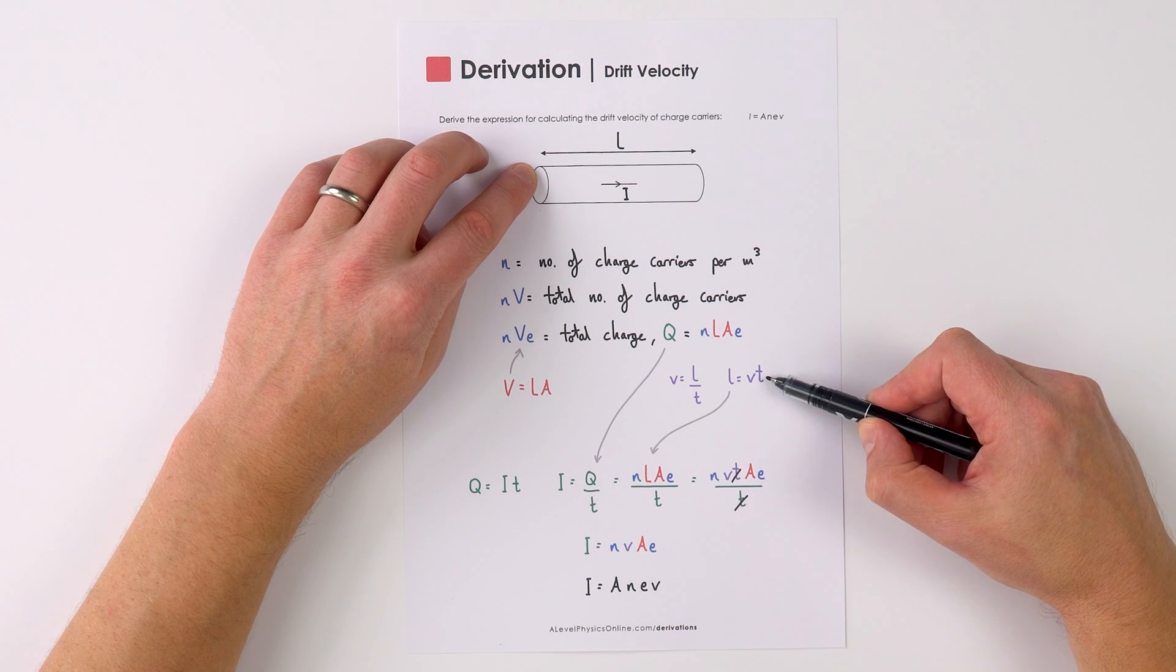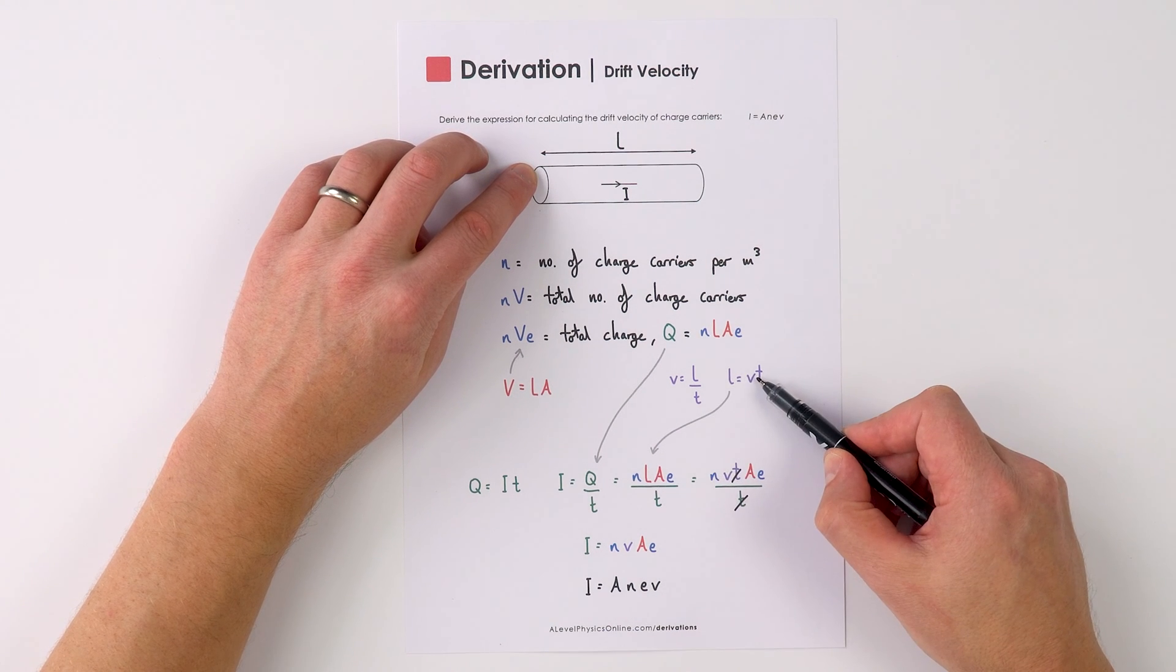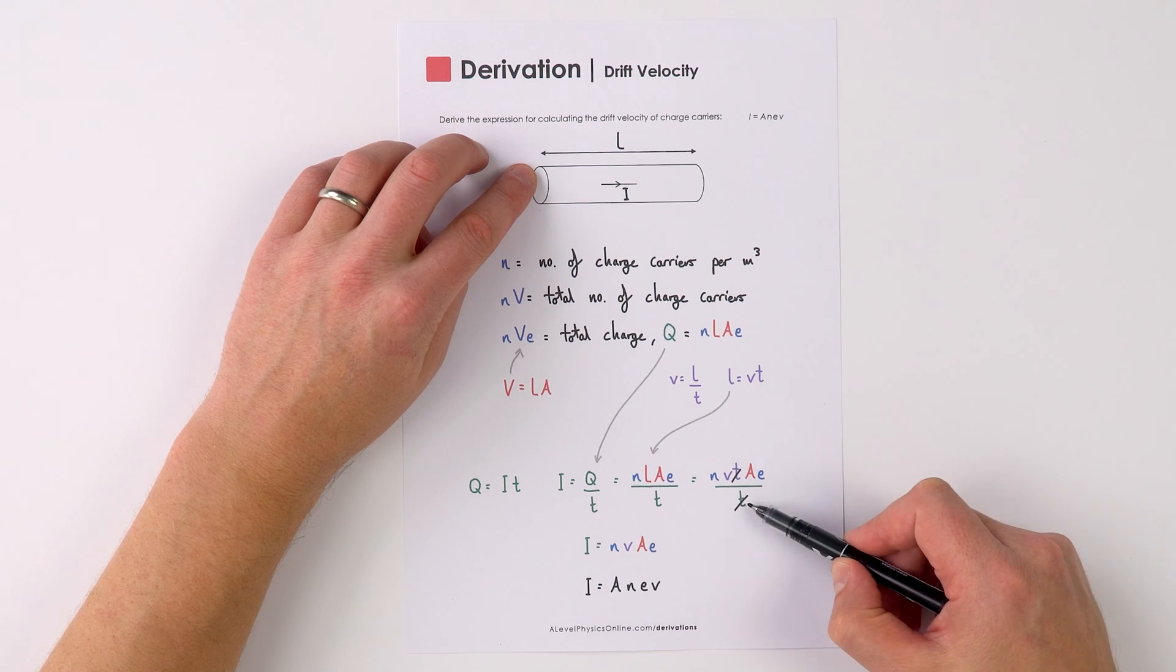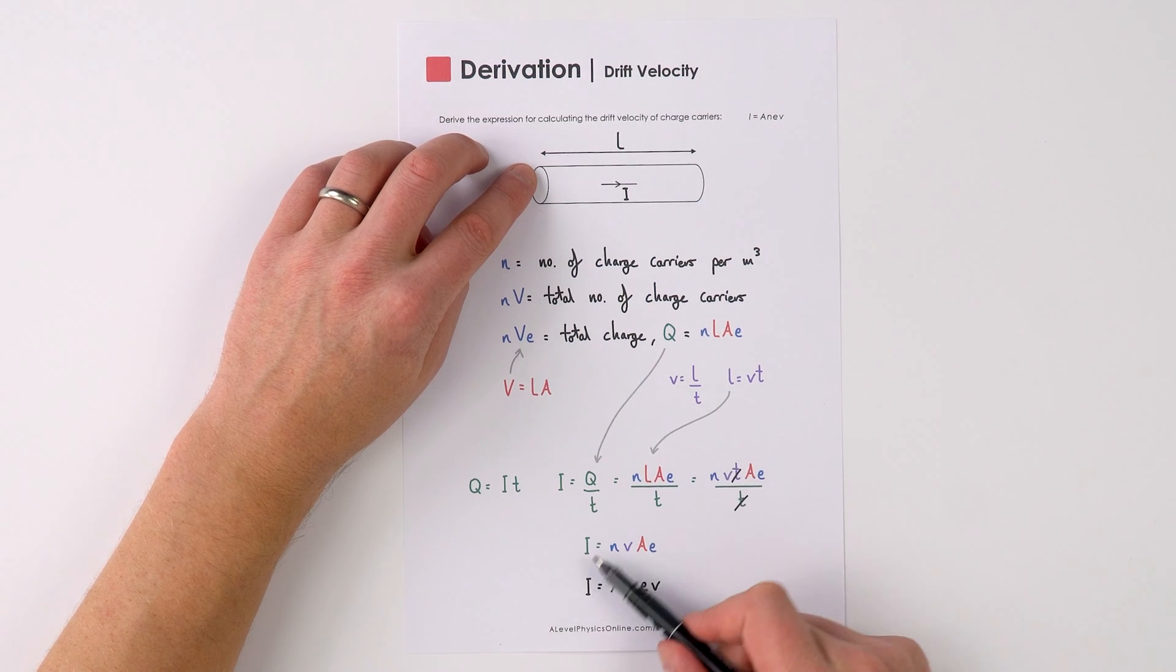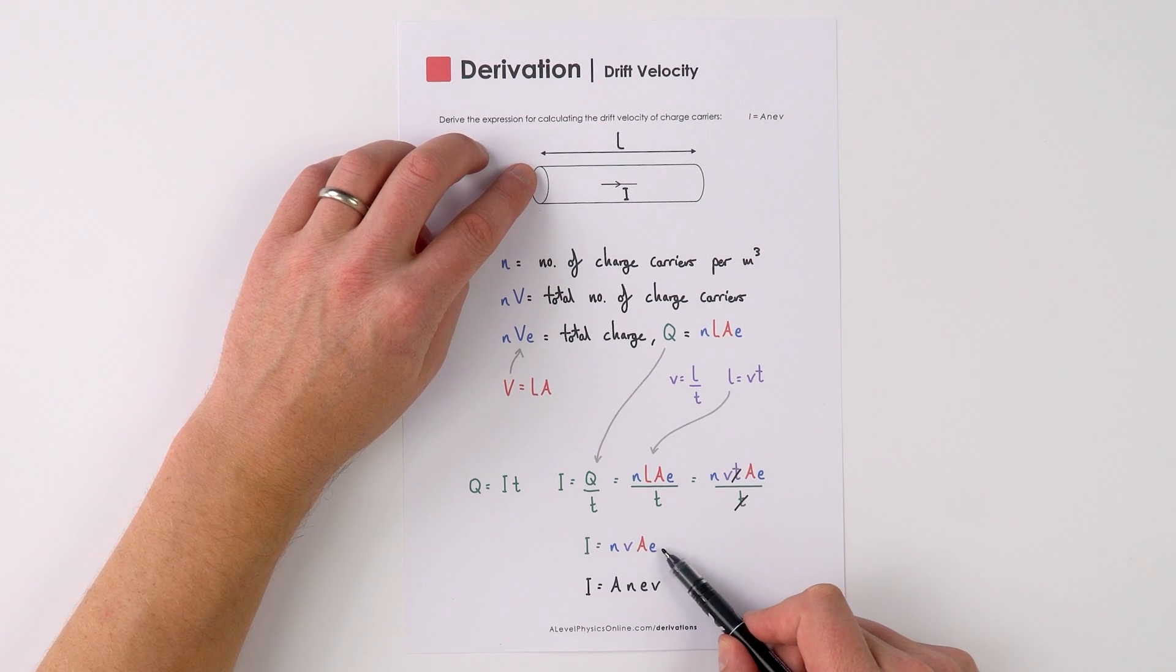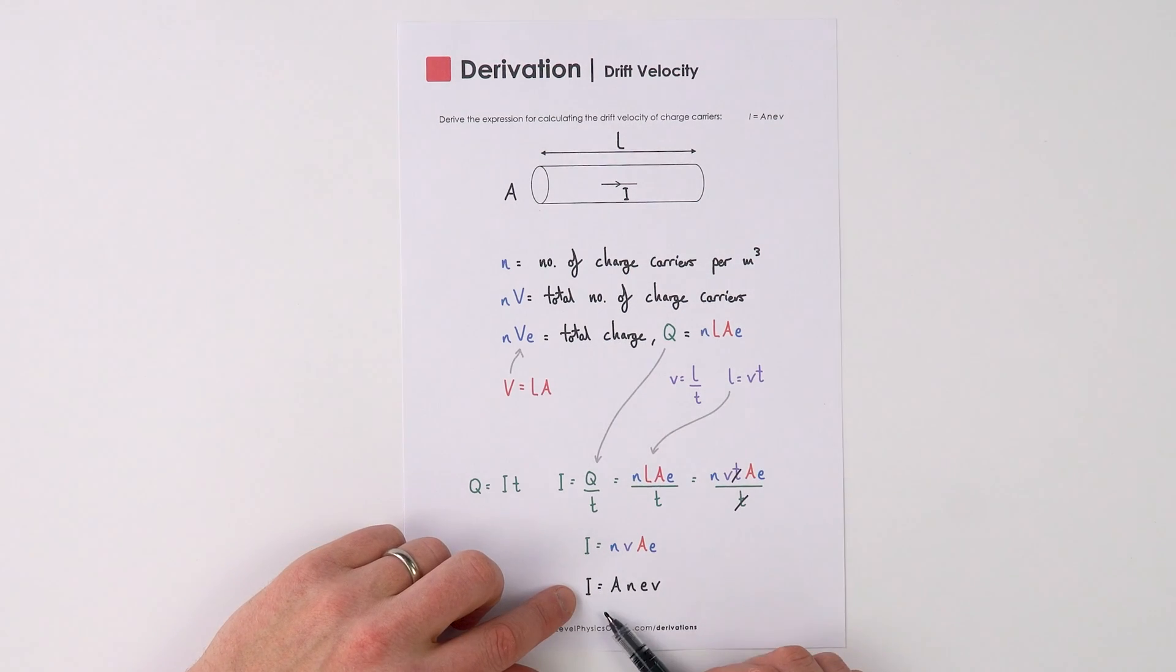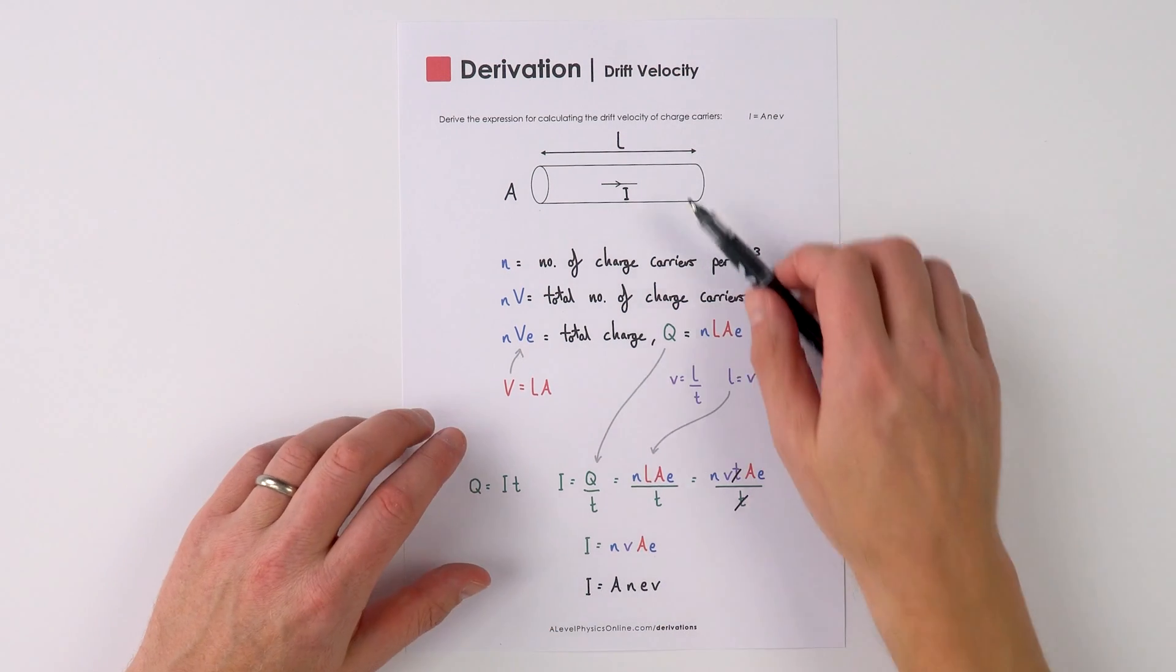Therefore what we can do is replace L with V T to say N V T A E over T, the T's cancel, and therefore I equals N V A E. Or we can put it into this format here to say that current is equal to A N E V, or of course you could rearrange this if you want to work out the drift velocity of the charge carriers in this material.